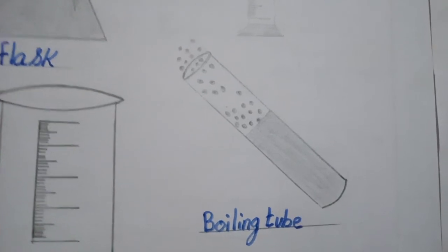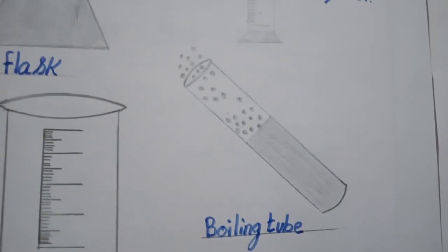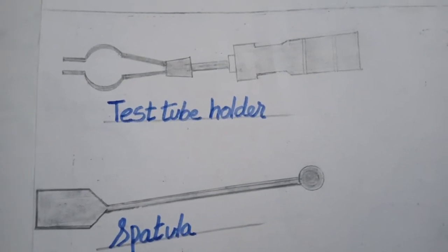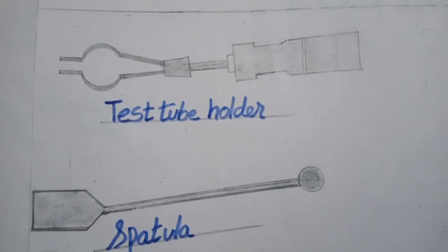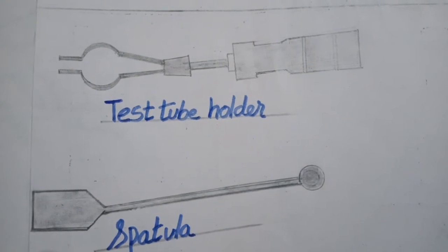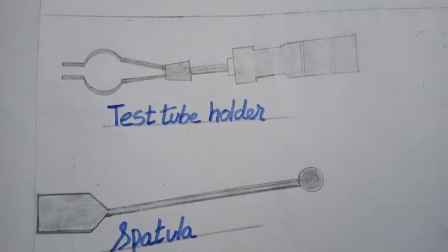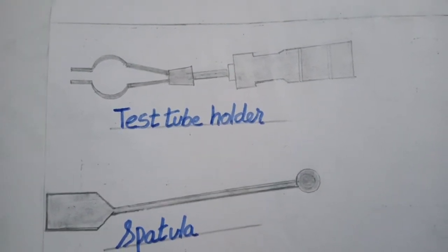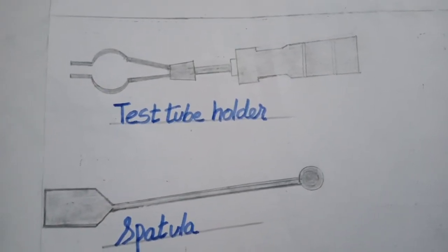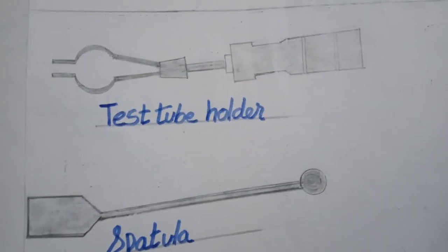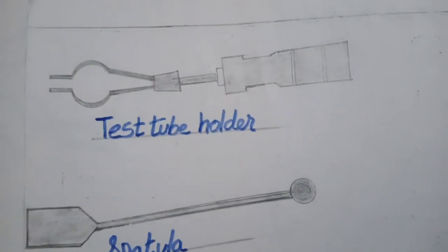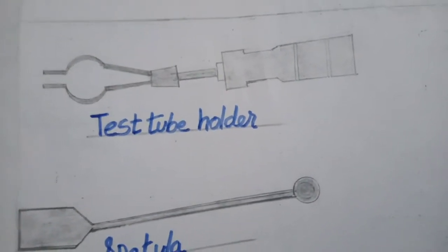Next is a test tube holder. This test tube holder is used when you are working with salt and mixtures in the test tube. Chemicals can be very dangerous, so you use this to gently hold the test tube while applying chemicals.